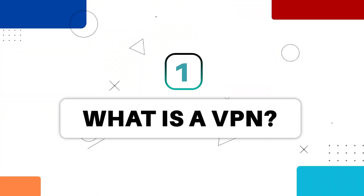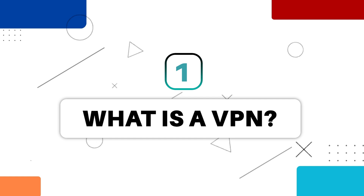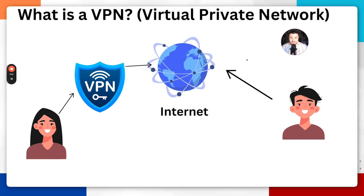Before we get into it, I just want to explain what a VPN actually is. VPN stands for Virtual Private Network, and in simple terms, a VPN is like a private tunnel between you and the internet. When you connect to the internet through a VPN, all the data that you send and receive travels through this secure tunnel, and this helps keep that data hidden from others on the network, such as your internet service provider.